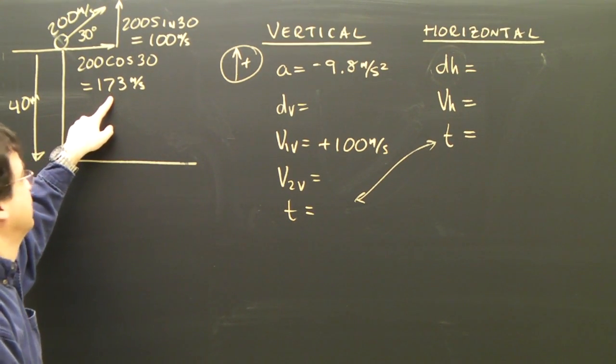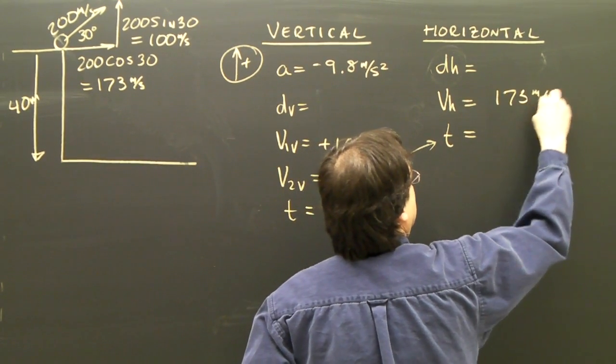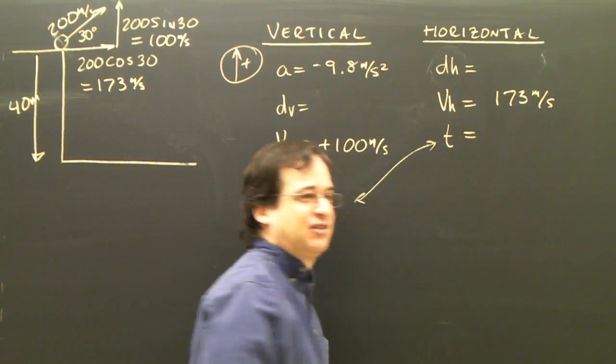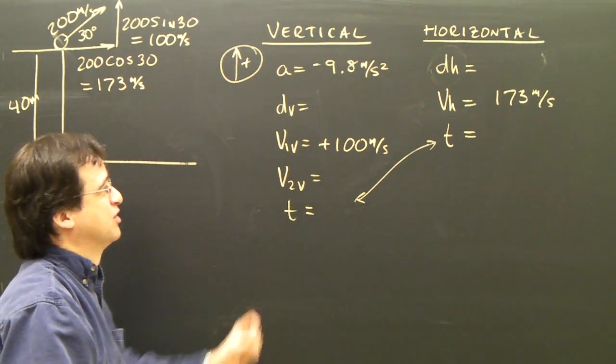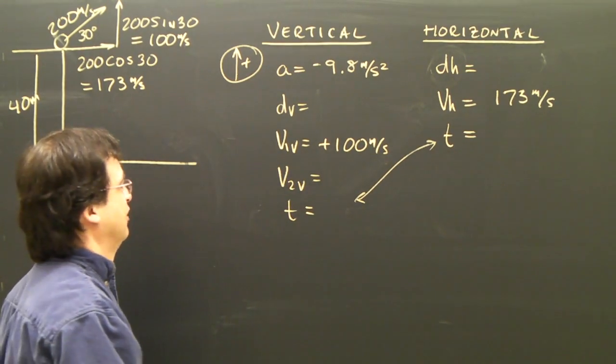I look at the other information. I've got my horizontal velocity here, 173 meters per second. And I don't have to think about positives or negatives, because this is always going to be positive. It's only this one we've got up and down that we have to have a sign convention.